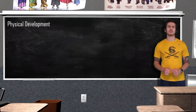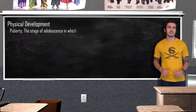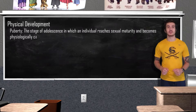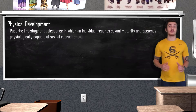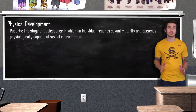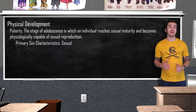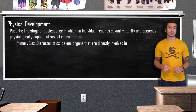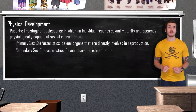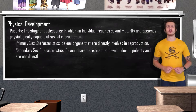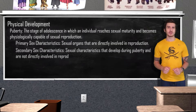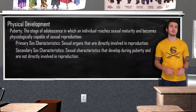As we age we go through puberty, which refers to the stage in adolescence where an individual reaches sexual maturity and becomes physiologically capable of sexual reproduction. The physical changes that occur as a result of puberty fall under two categories. Primary sex characteristics are sex organs directly involved in reproduction, while secondary sex characteristics develop during puberty and are not directly involved in reproduction. These traits differentiate between boys and girls.